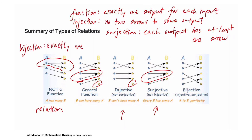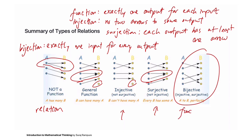An interesting consequence is that if you take the inverse of a bijective function, the inverse is also a function. Not all injective functions have inverses, and not all surjective functions have inverses — for a function to be invertible, it must be bijective. If you're following the class at UC Berkeley, you'll do many practice problems determining whether functions are bijections, injections only, surjections only, or not even functions.